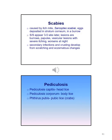Scabies are caused by an itch mite and occur when eggs are deposited in the stratum corneum in a burrow. Signs and symptoms may appear as far out as three to five weeks later. The lesions are burrows, papules, and vesicular lesions with severe itching that is worse at night. Secondary infections may occur, and crusting may develop from scratching and eczematous changes.